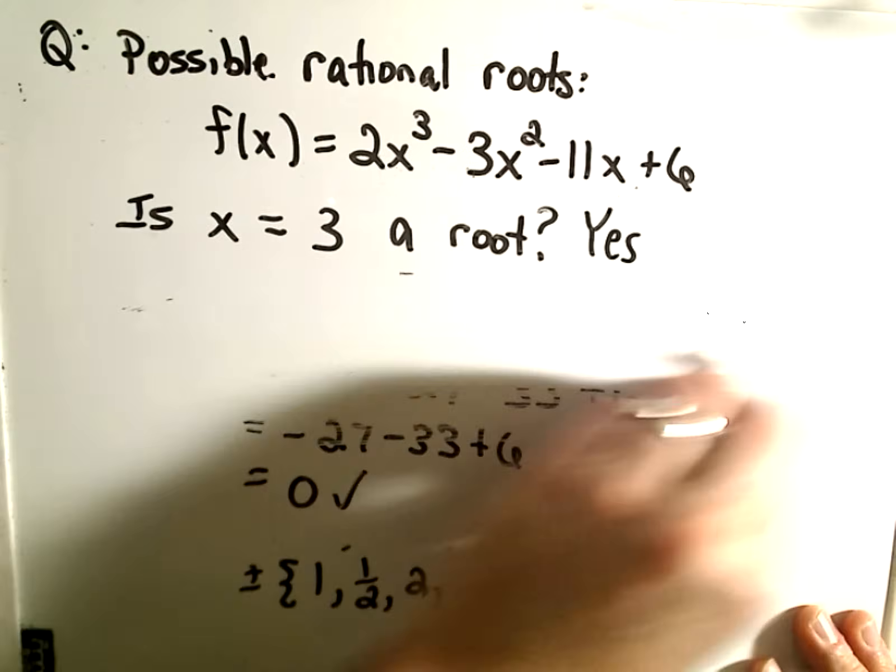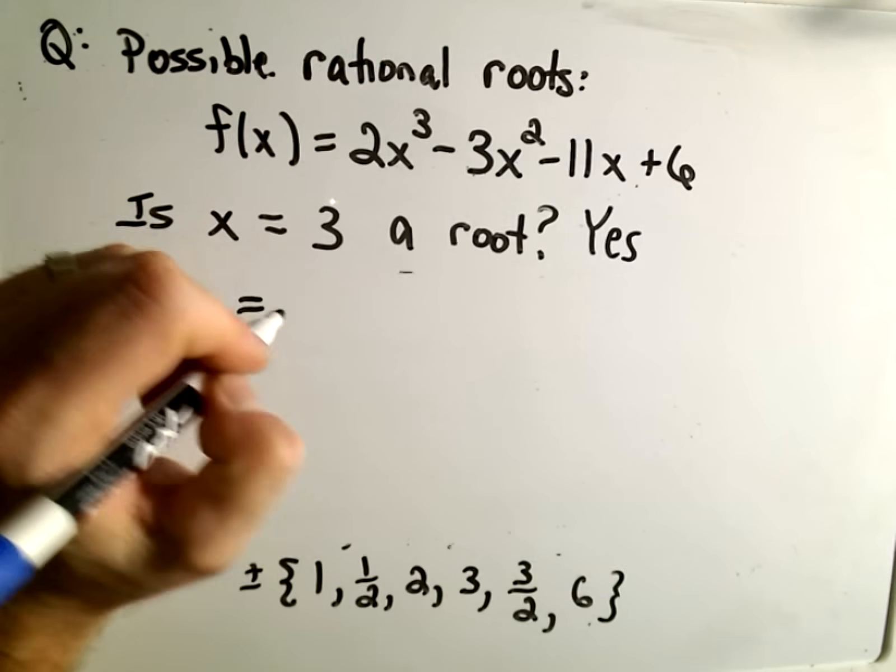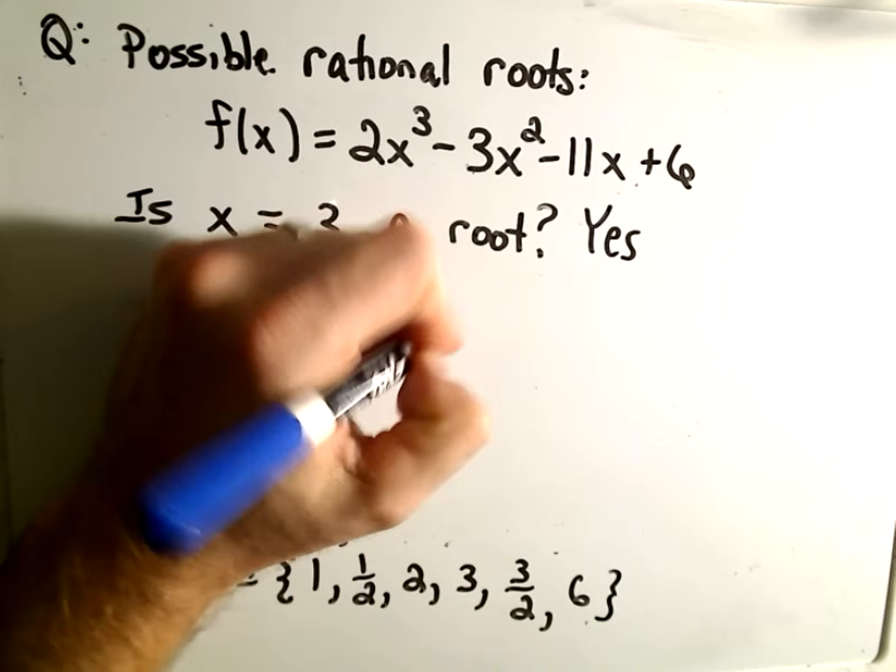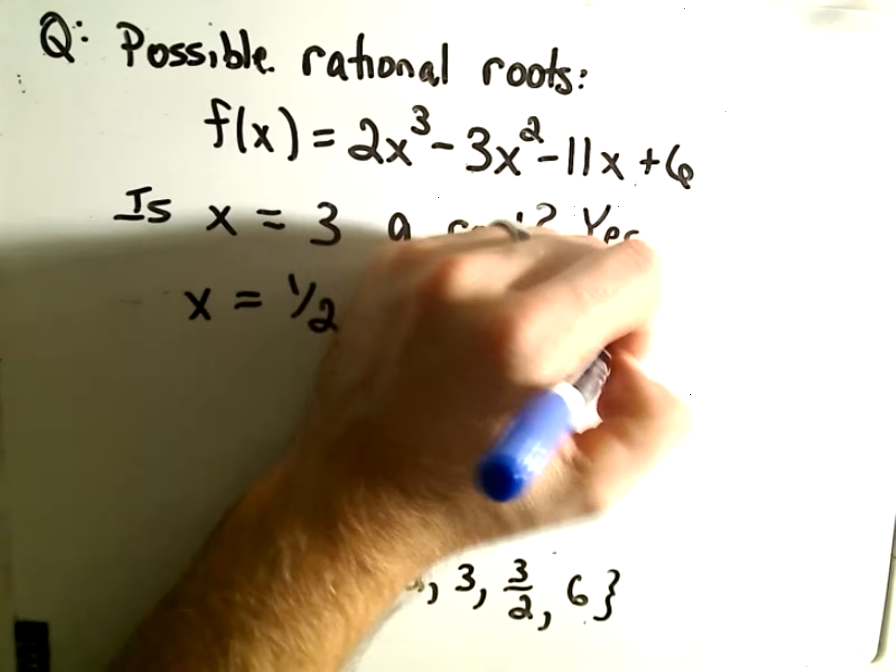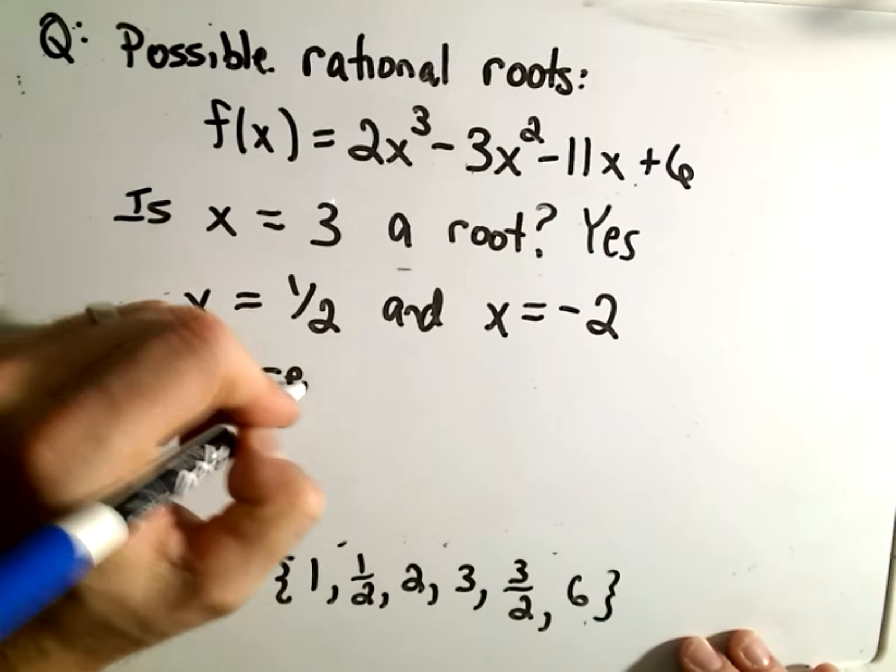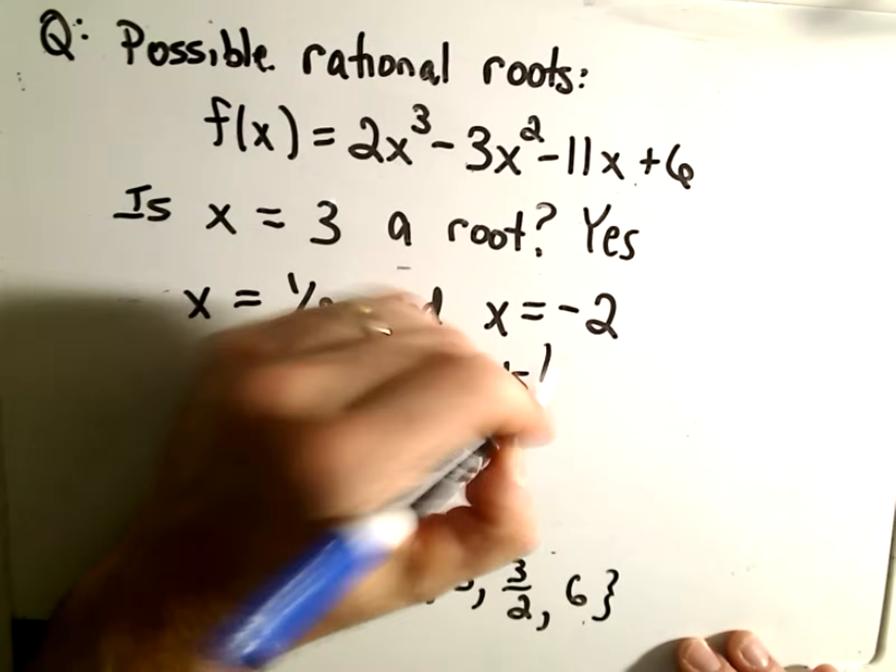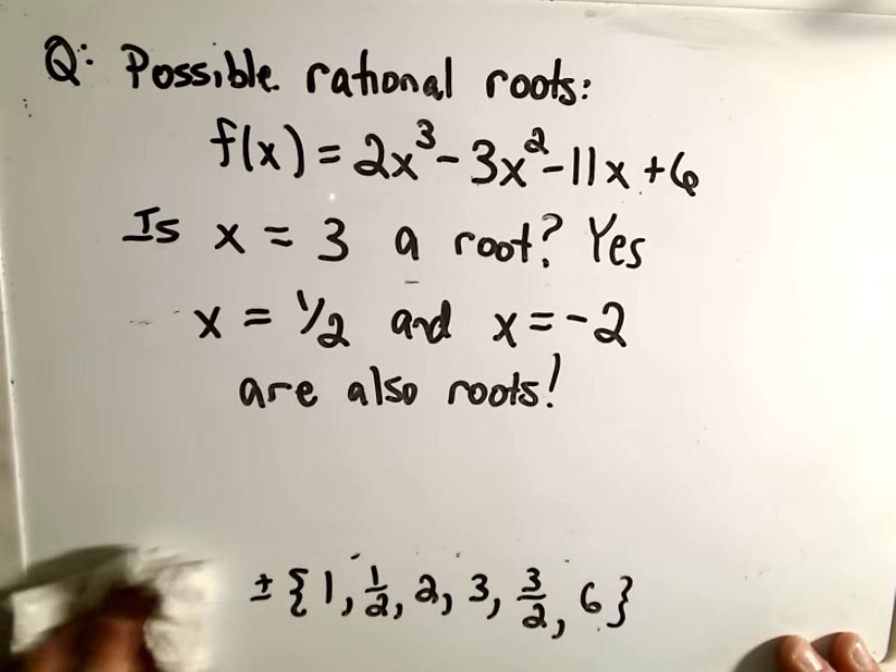You can actually check, I think my arithmetic was okay here. x = 1/2 and x = -2 are also roots. So in this case, my polynomial I set it up to actually have 3 rational roots. But that doesn't have to happen at all.